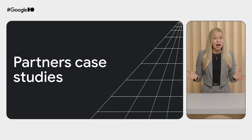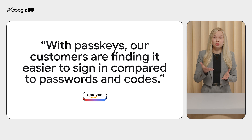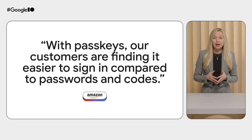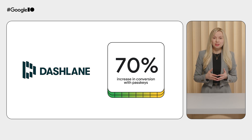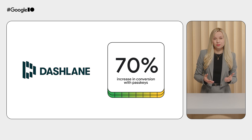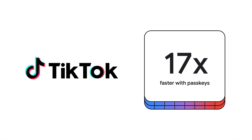Let's look at feedback from apps that integrated Credential Manager and Passkeys last year. Amazon integrated Passkeys into its Android Shopping app and corresponding website, and shared that customers are finding it easier to sign in compared to passwords and codes. Dashlane, a password management tool, sees a 70% increase in conversion rate for signing in with Passkeys compared to passwords. TikTok, with more than 1 billion users, found that users log in 17 times faster with Passkeys than with other methods. After adopting Credential Manager, TikTok developers also saw significantly improved overall login success rate when implementing sign-in with Google.